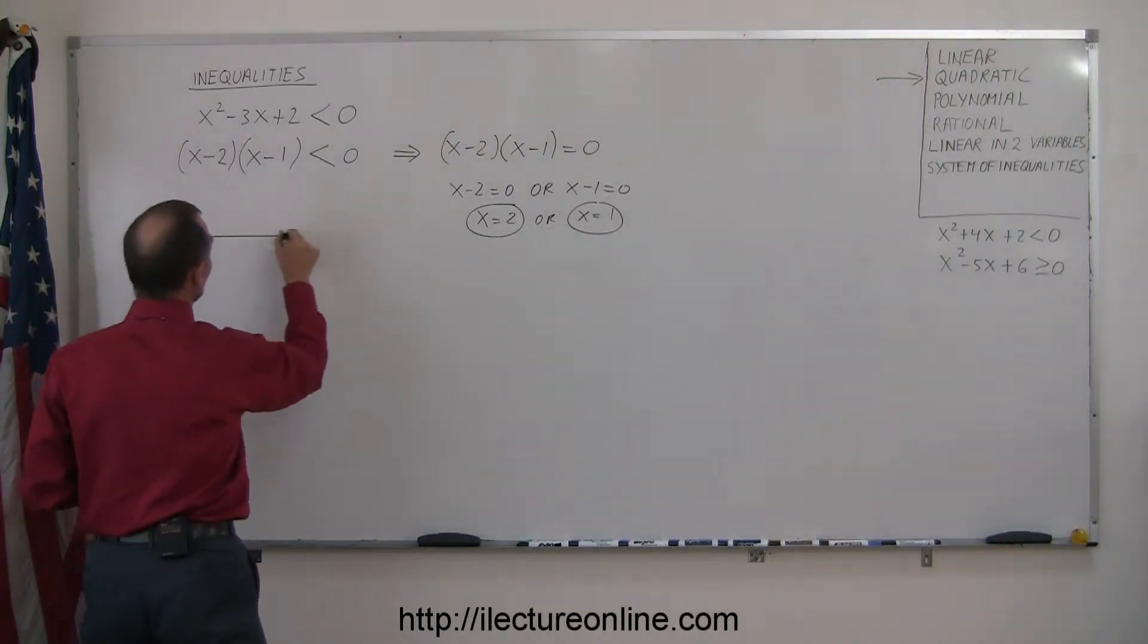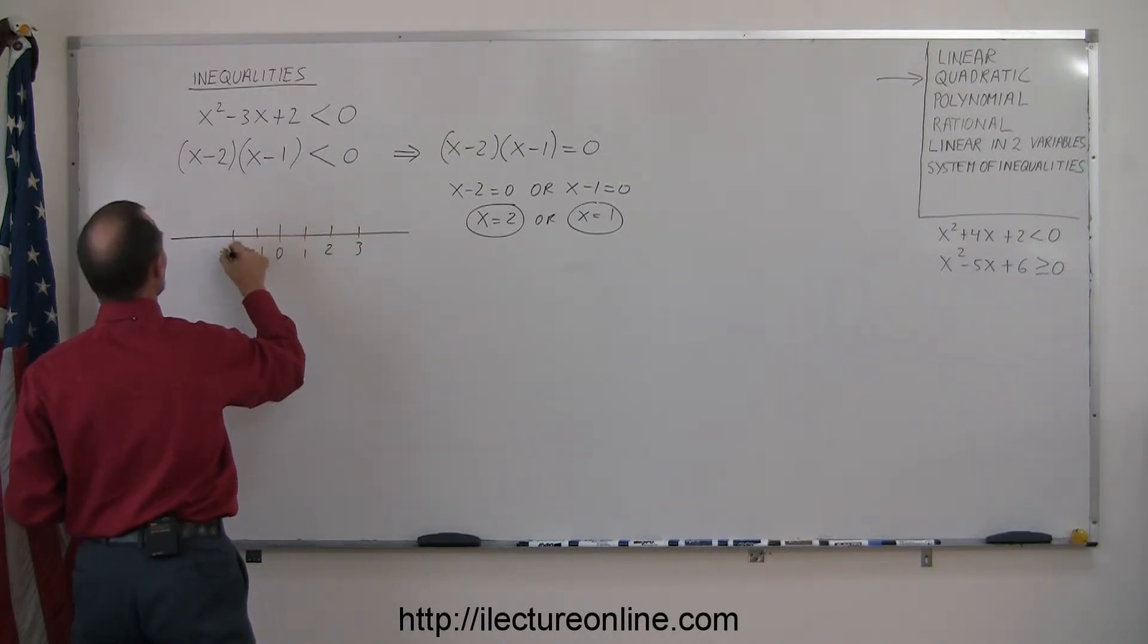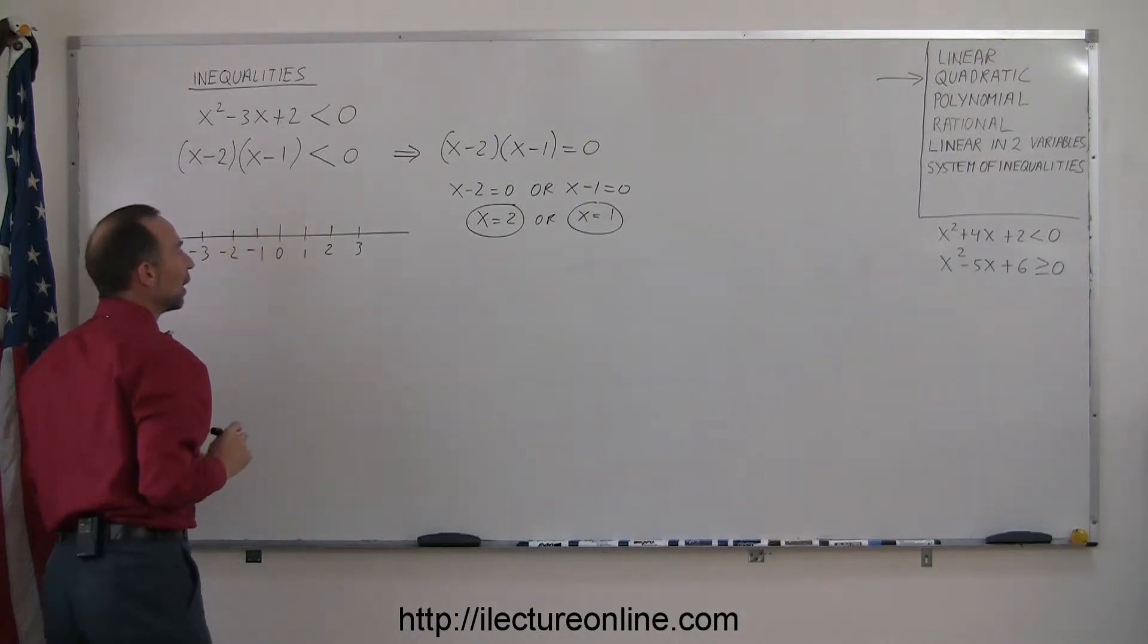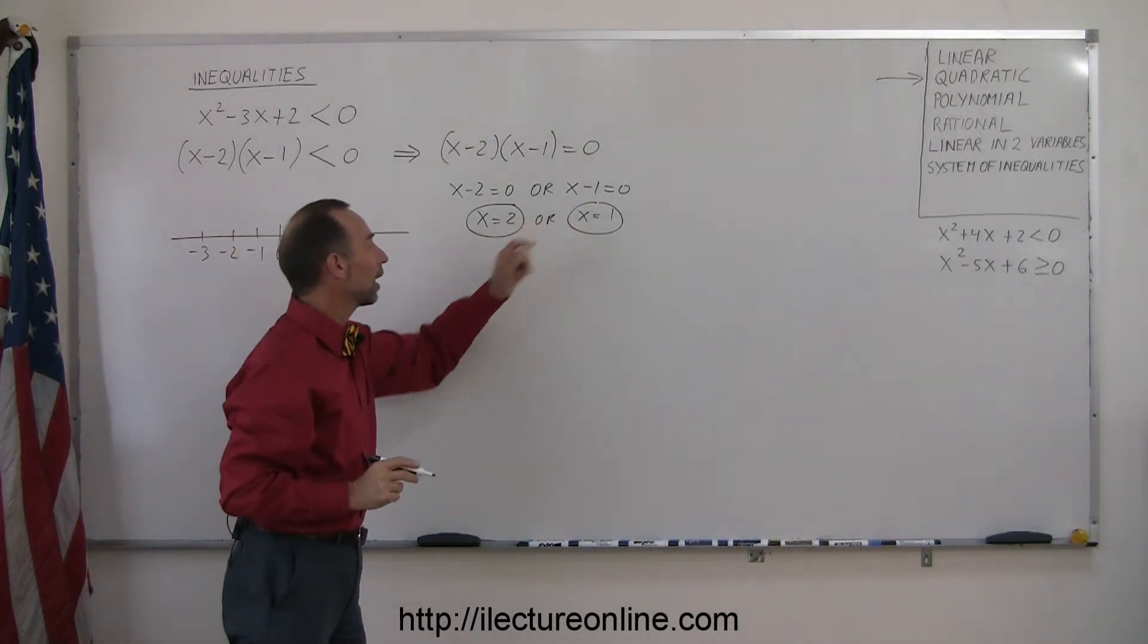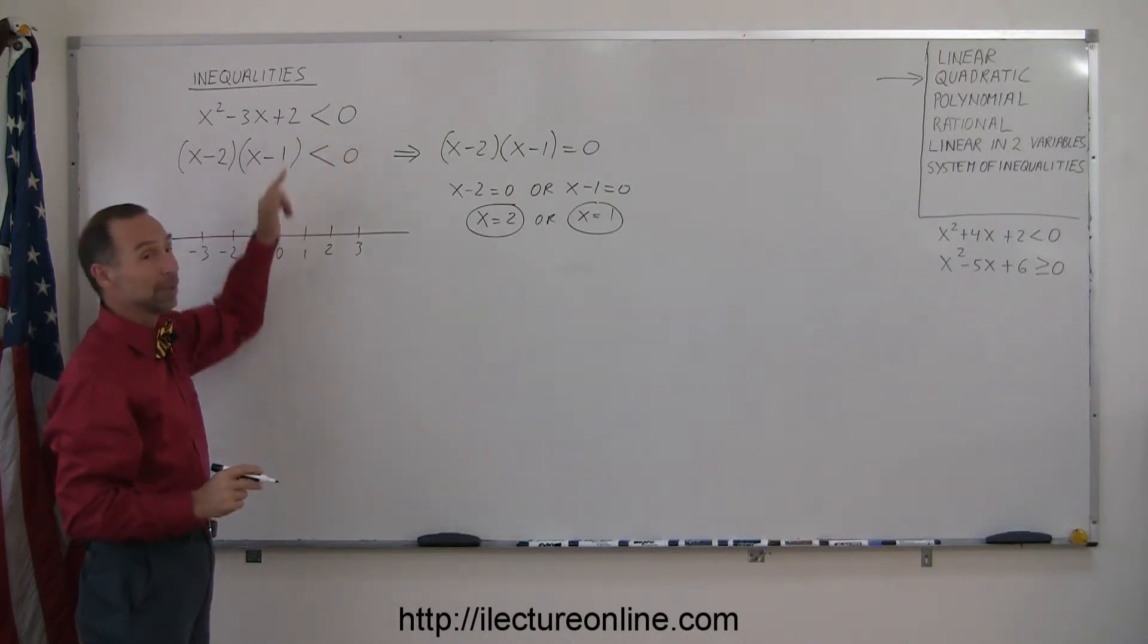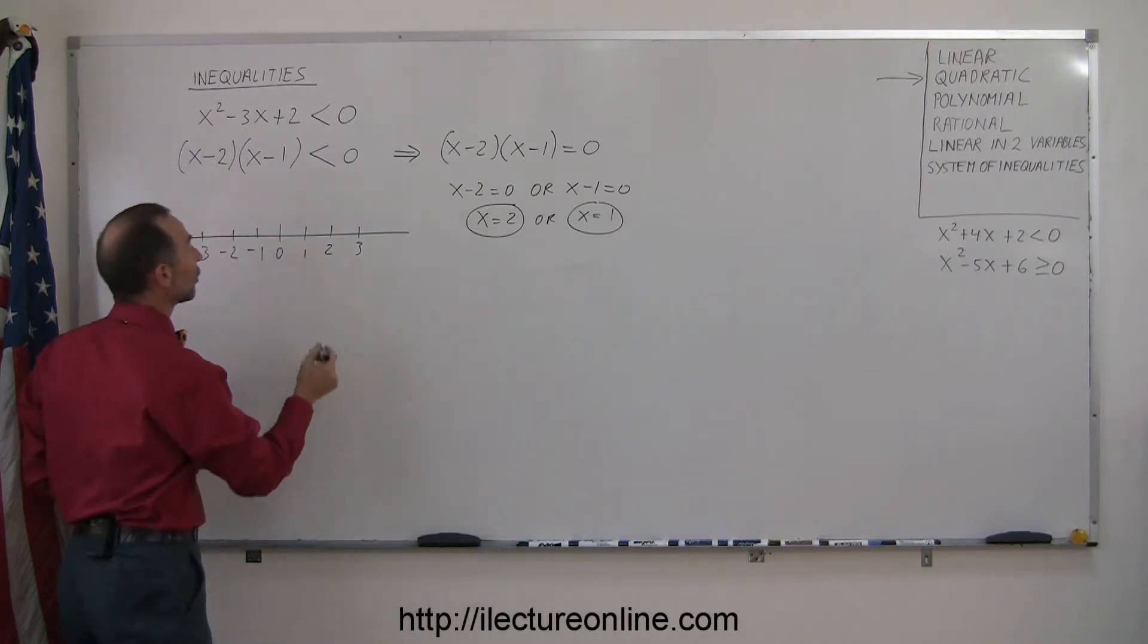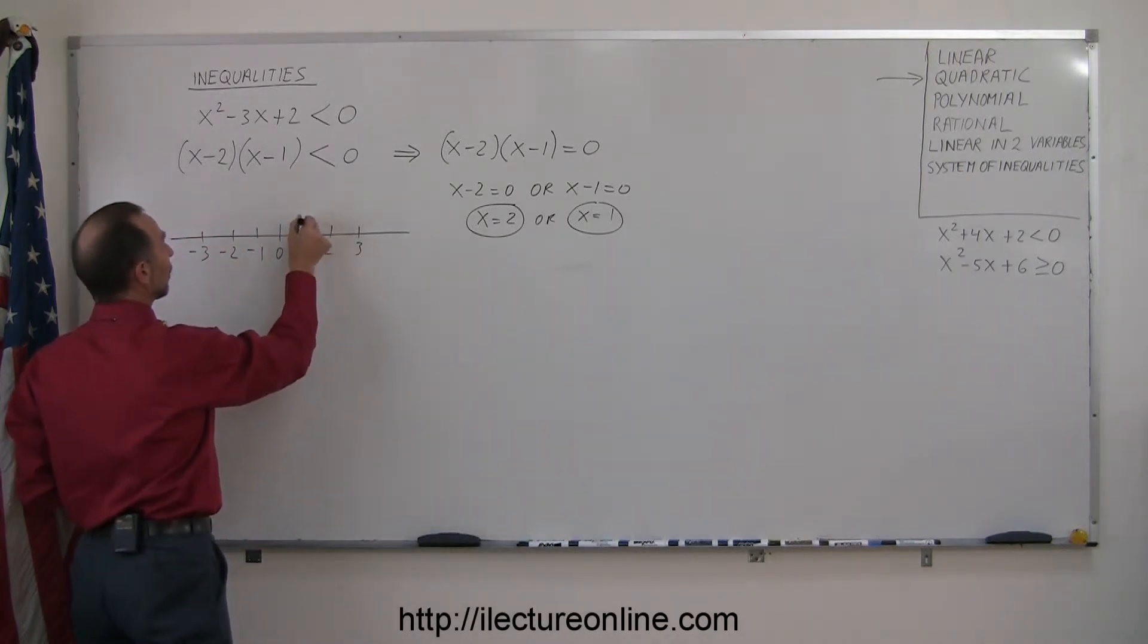So we draw the number line. We find the number 0. We put on some of the other numbers: 1, 2, 3, negative 1, negative 2, negative 3. Here's a number line. We find these two points on the number line. And since we don't have an equal sign there, only an inequality, that means those two points do not belong to the solution. So we draw little circles around those points, one around the point 1, one around the point 2.